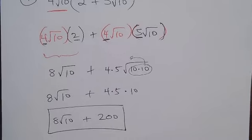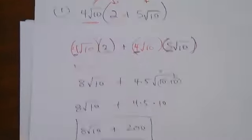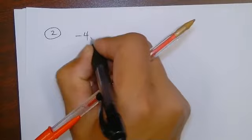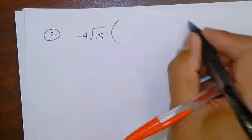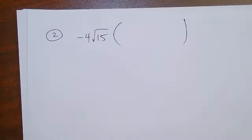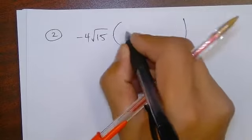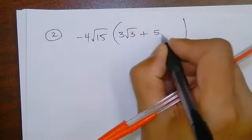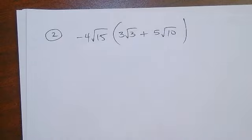Number 2. Did everybody get that? If not, you can see the video. Pause it, rewind it. Negative 4 root 15 on the outside and then multiply to this inside expression here. 3 root 3 plus 5 root 10.